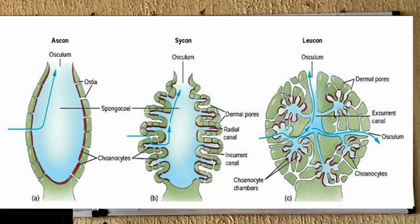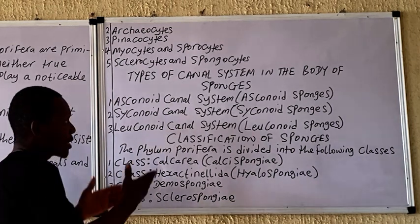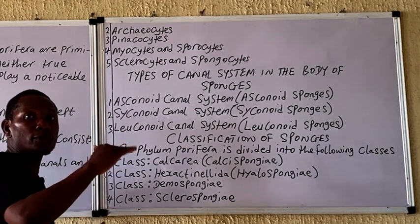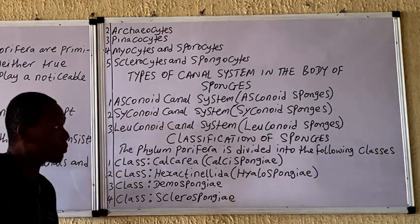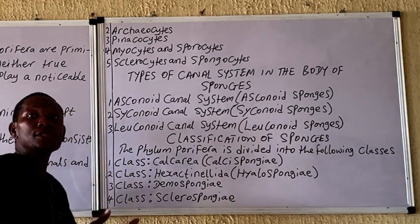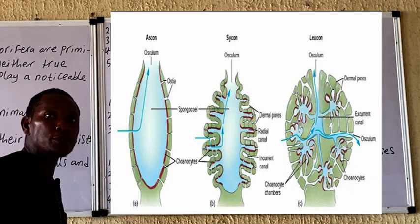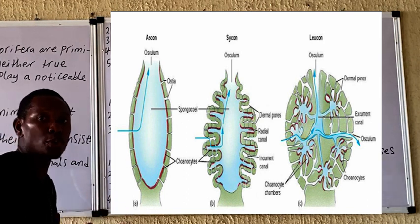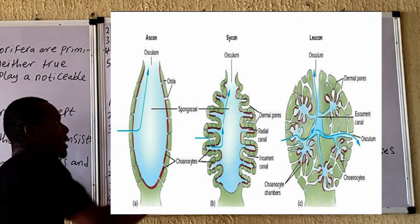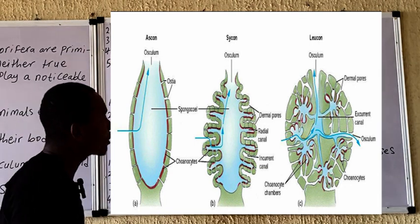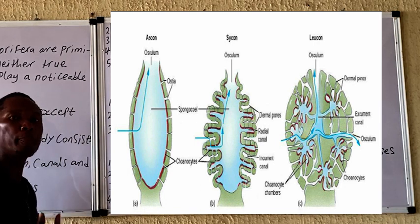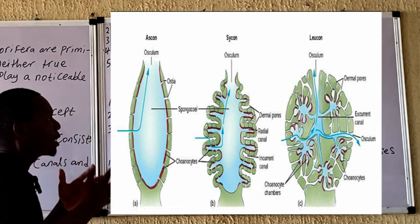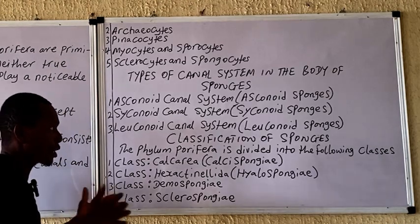The syconoid sponges, as seen in the diagram on the board, have an increased surface area as a result of body infolding. This increased surface area enables them to capture and absorb more food material, as well as being able to increase in size. The leuconoid canal system, as seen in the diagram on the board, is the most complex canal system in the sponge phylum.